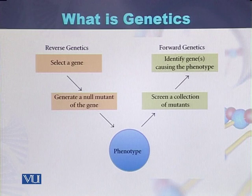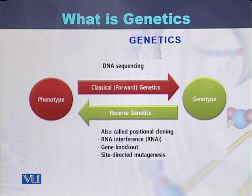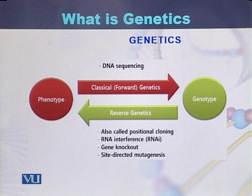So there are two ways of studying genetics: reverse genetics and forward genetics. If we study genotype based on the phenotype, then it is called classical genetics.